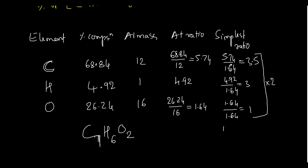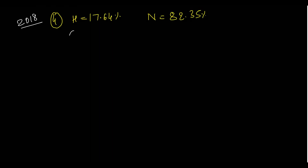You cannot multiply only carbon because that would distort the ratio of hydrogen and oxygen. You must multiply all simplest ratio values by 2 to make them whole numbers. If you get 1.5 or 2.5, multiply all by 2 the same way. This question was asked in 2018.